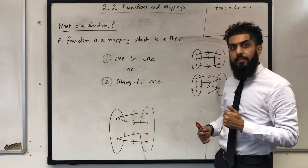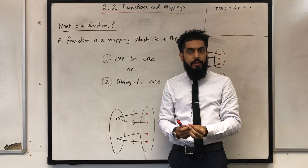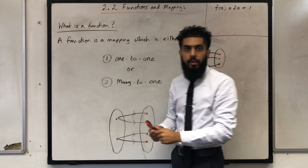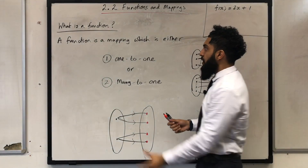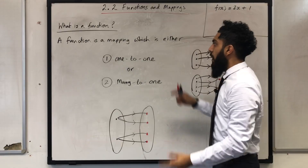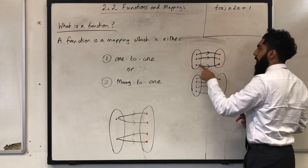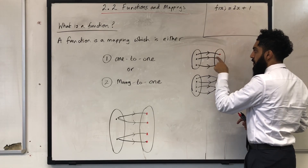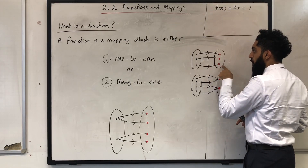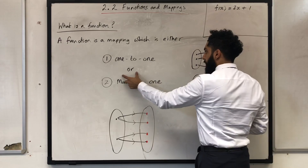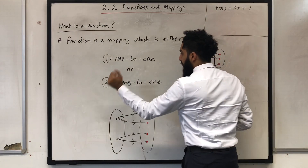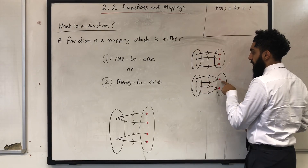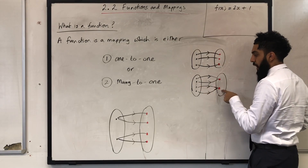So far we know what a mapping is and the different types of number systems. Now we are going to move on to what is a function. A function is a mapping which is either one-to-one or many-to-one.